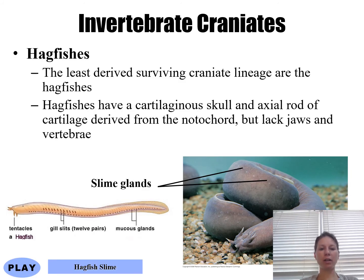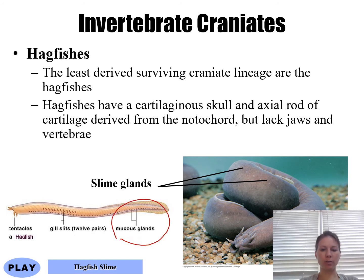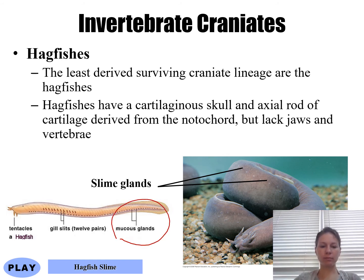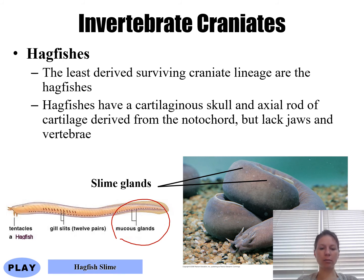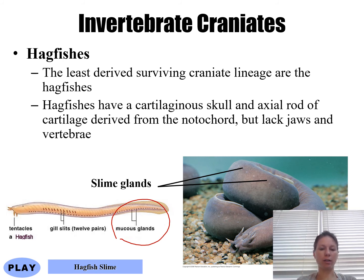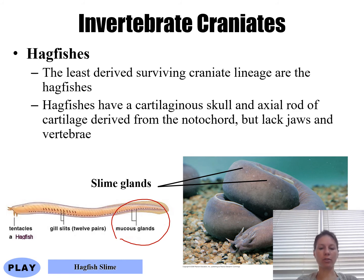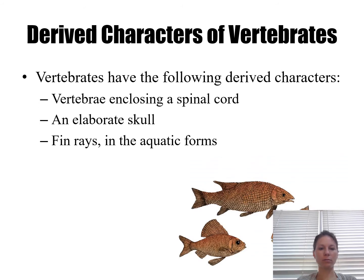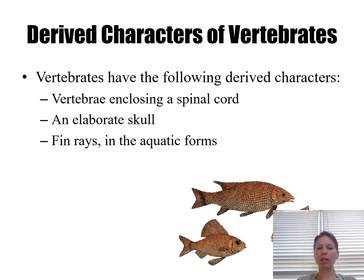The first craniate we'll look at doesn't have a backbone — it's called a hagfish. These are neat because they have mucus glands that can produce a lot of mucus when another animal catches them. The mucus actually clogs up the gills of fish trying to eat them, and is used as a defense mechanism.